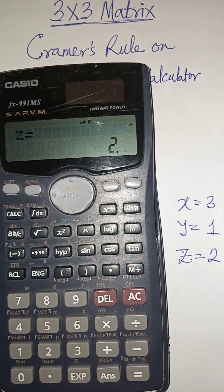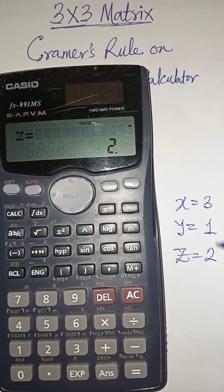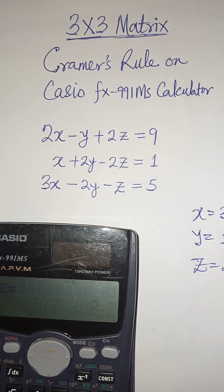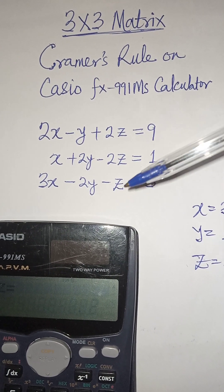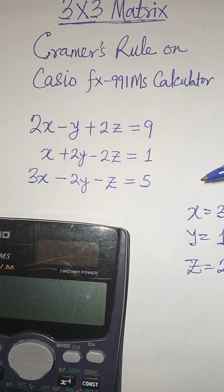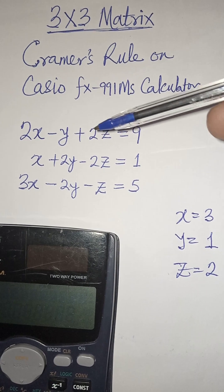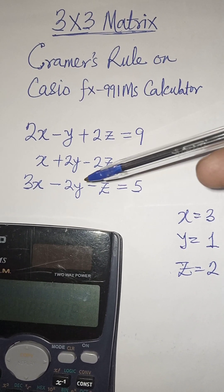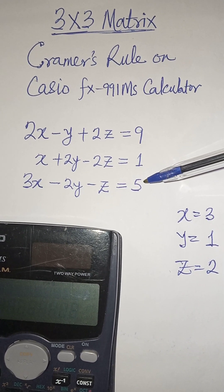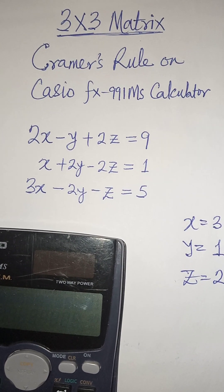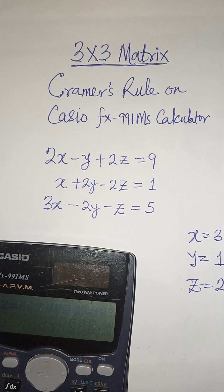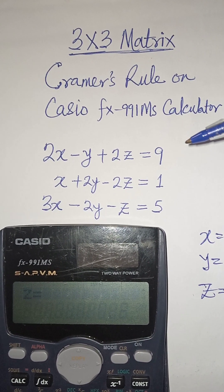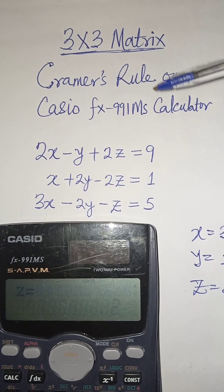If you solve it manually you get these values. If you plug these answers into equation 1, the left hand side will give you 9. If you do that to equation 2, the left hand side will give you 1. If you do that to equation 3, the left hand side will give you 5. That's how to use calculator to solve Cramer's rule through determinants or 3 by 3 matrices.